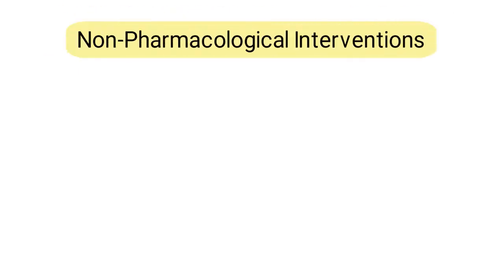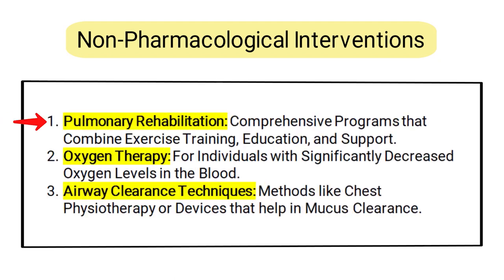There are also non-pharmacological interventions, including pulmonary rehabilitation — a comprehensive program that combines exercise training, education, and support. Oxygen therapy is helpful for individuals with significantly decreased oxygen levels in the blood. Airway clearance techniques involve methods like chest physiotherapy or devices that help with mucus clearance.